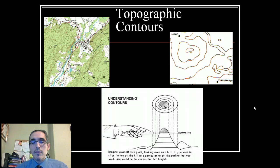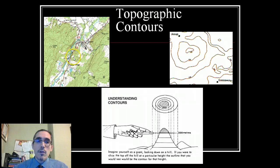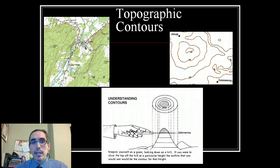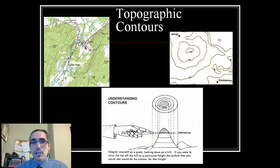Topographic maps are another type of very popular — and very important — map that show the shape of the land. They show elevation changes across the landscape. You can see in this upper left corner this topographic map, and it's kind of a classic image: shades of green with a lot of brown squiggly lines all over it. The brown squiggly lines are really important because those are the things that communicate the shape of the land, the changes in elevation and the slope.